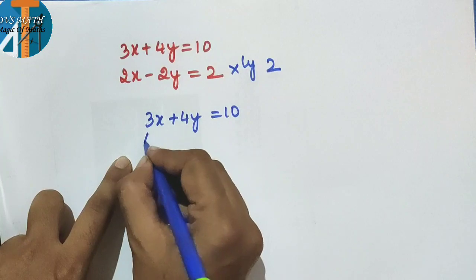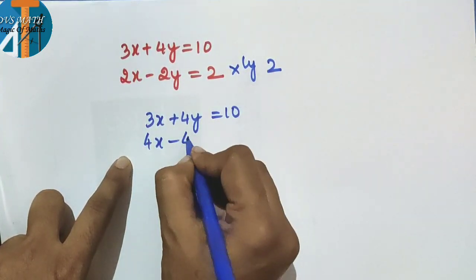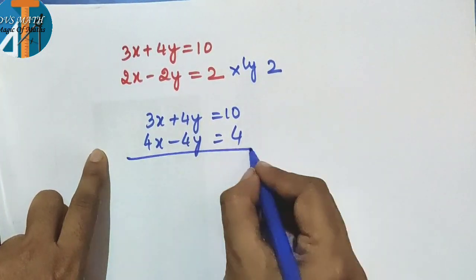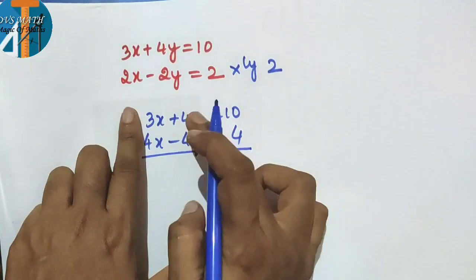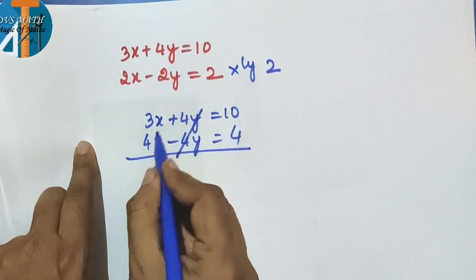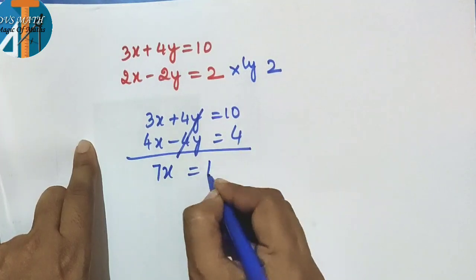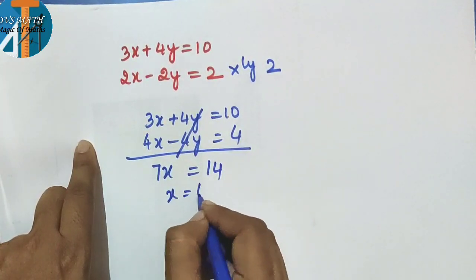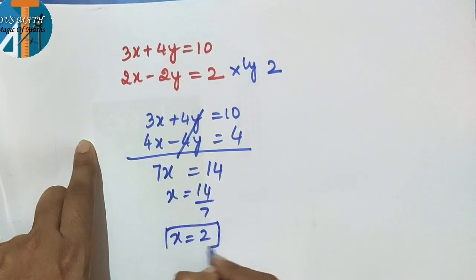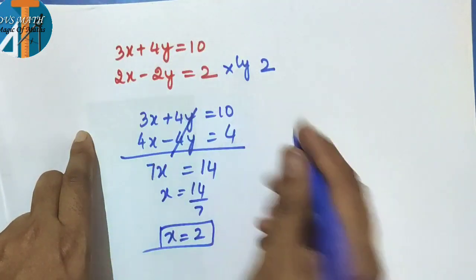Observe the signs: the y terms are plus 4y and minus 2y, which are opposite signs, so add the equations and the y terms cancel. Then 3x plus 4x = 7x, and 10 plus 4 = 14. So x = 14 divided by 7, x is equal to 2. Now substitute x = 2 into any one equation.